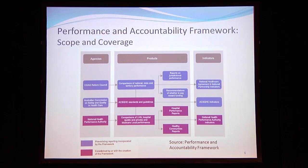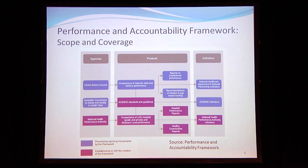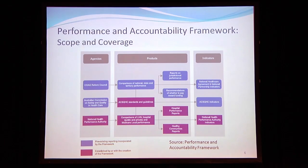This first slide is a graphic right from the performance and accountability framework. It really talks about the relationship between agencies in terms of reporting — for example, the COAG Reform Council, the Australian Commission for Safety and Quality, and the National Performance Authority. The upper one, the COAG Reform Council, produces reports on jurisdictions with indicators in existing intergovernmental agreements, comparing national, state, and territorial performance right across the top.